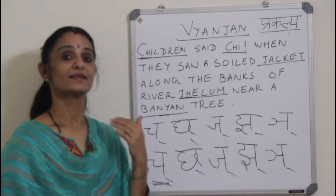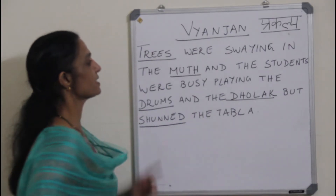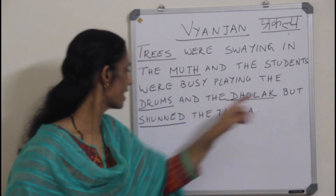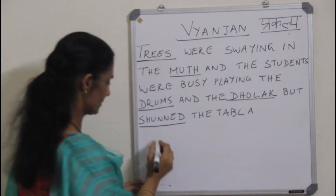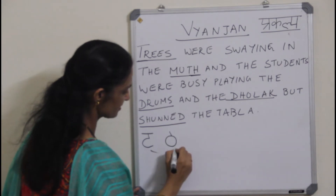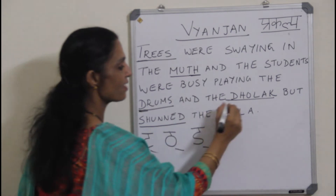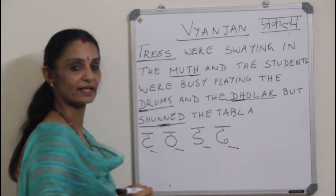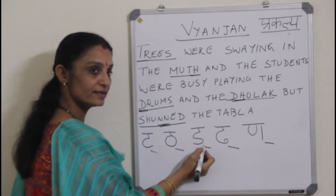Now we go ahead with the next cluster of Vyanjan. The sentence is: 'Trees were swaying in the mud and the students were busy playing the drums and the jholak, but shunned the tabla.' Five words again. I take T from trees, Tch from mud, Dh from drums, Dh from jholak, and Na — the final member of this cluster. So it is T, Tch, Dh, Dh, Na.